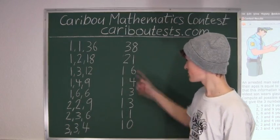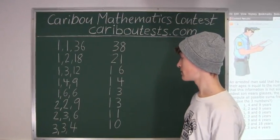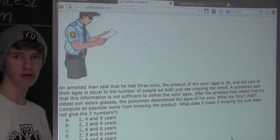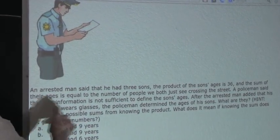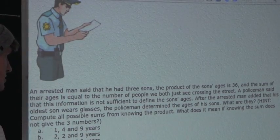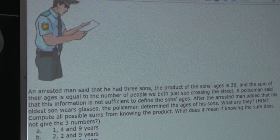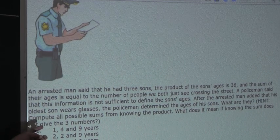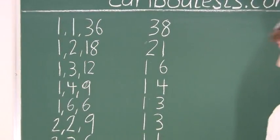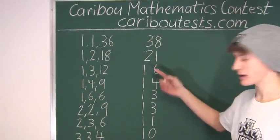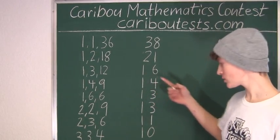So now we know the sums of all possible combinations of ages. But what do we do next? Let's look into the question for the next clue. Let's read the last hint. It says, what does it mean if knowing the sum does not give the three numbers? Well, if knowing the sum would give the three numbers, that would be, for example, the sum 10 or 11, because those sums appear only once.